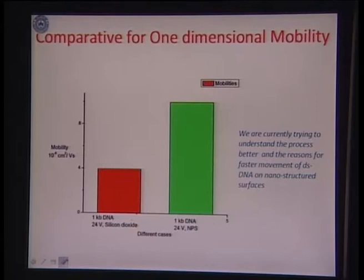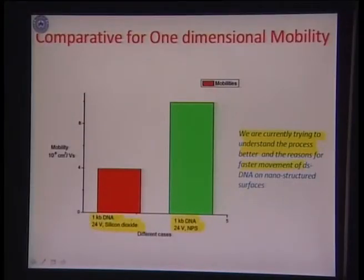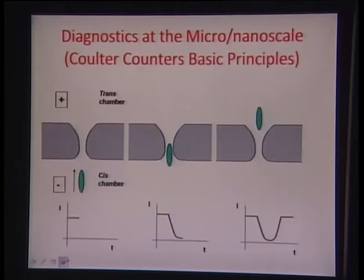Super-focusing can be obtained by using a different surface energy pattern on a surface, making a narrow hydrophilic pattern where all the DNA would rapidly converge. We are also doing mobility studies showing that on a higher energy surface like silicon dioxide as opposed to a lower energy porous silica surface, we have differential mobilities. We are trying to understand the process better — this is how surface electrophoresis can be done.